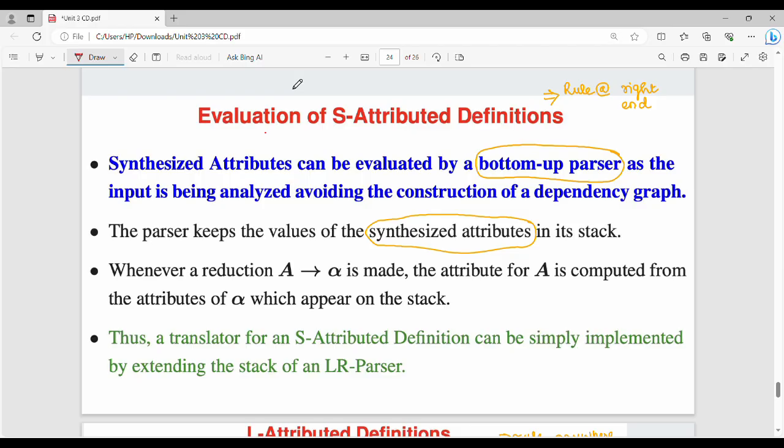S-attributed definition is very simple. Point number one: it allows only synthesized attributes. Point number two: define the rules using syntax directed translation scheme with semantic rules at the right end. Point number three: bottom-up evaluation. So the three key things are synthesized attributes, semantic rules, and bottom-up parser evaluation.